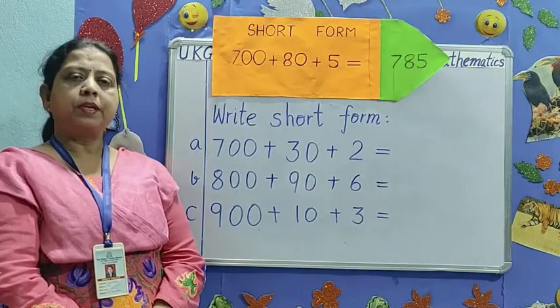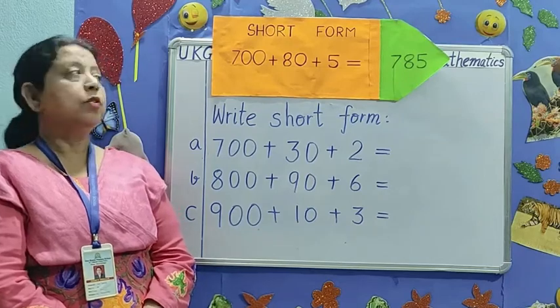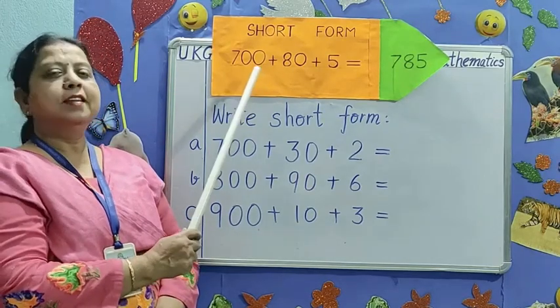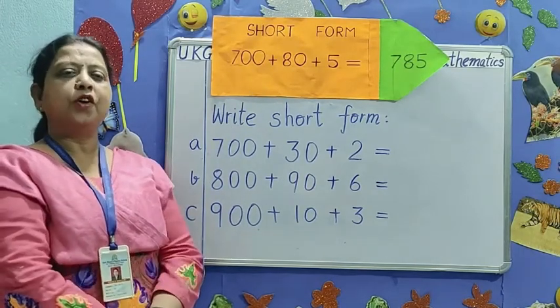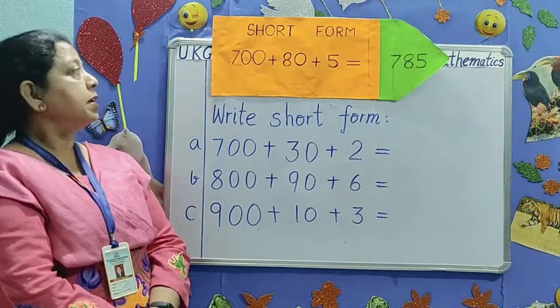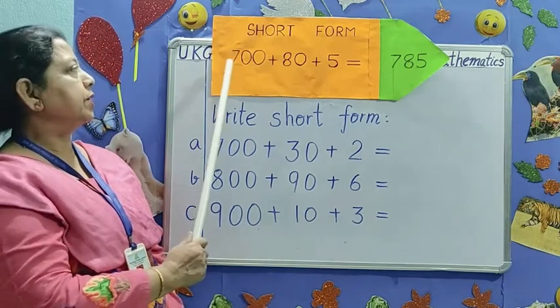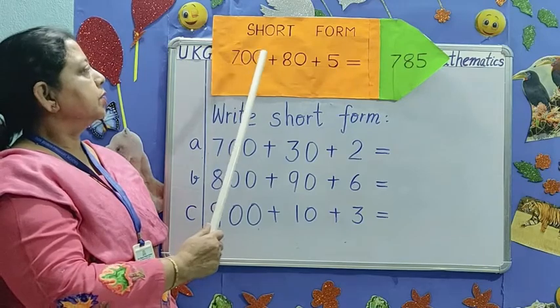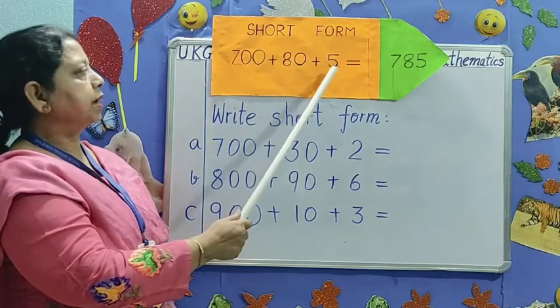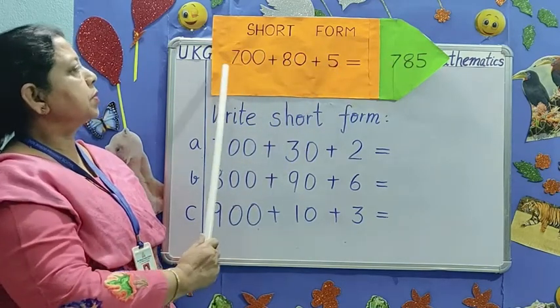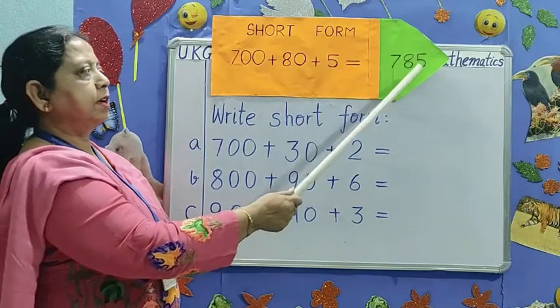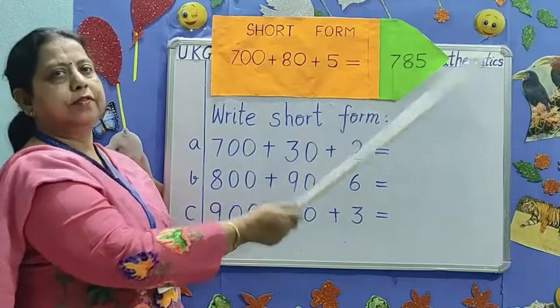The next topic is short form. What is this children? Yes, this is a long pencil. The number is written in expanded form. 700 plus 80 plus 5 equals 785. The short form is 785.